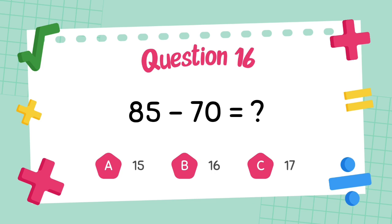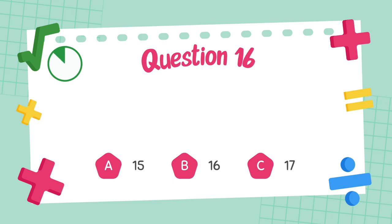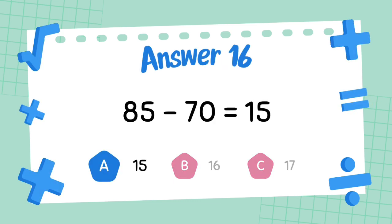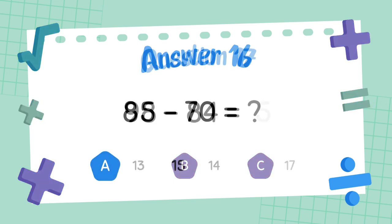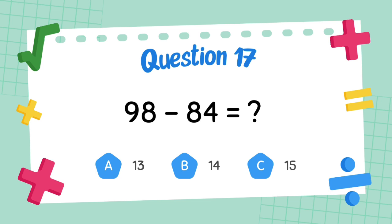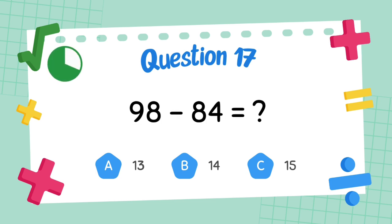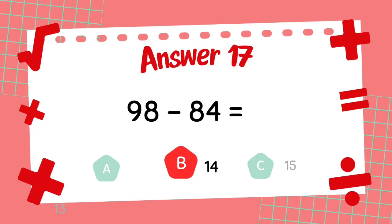What is 85 minus 70? The answer is 15. What is 98 minus 84? The answer is 14.